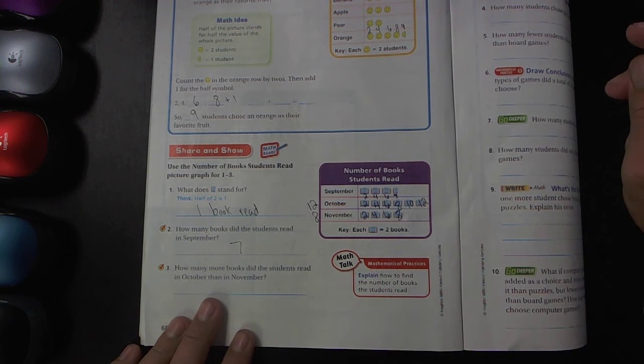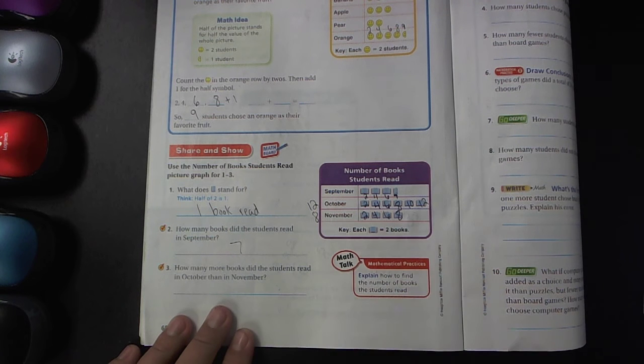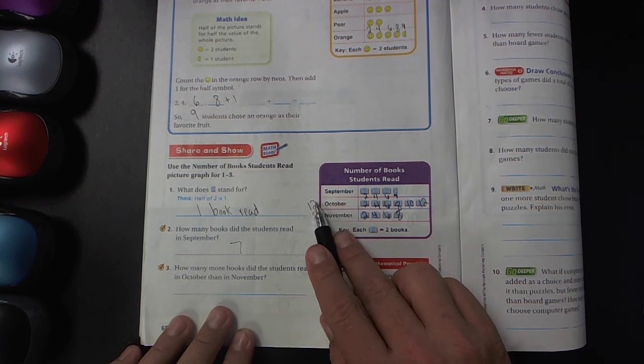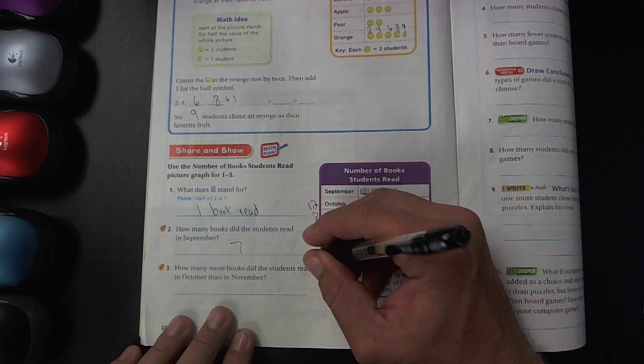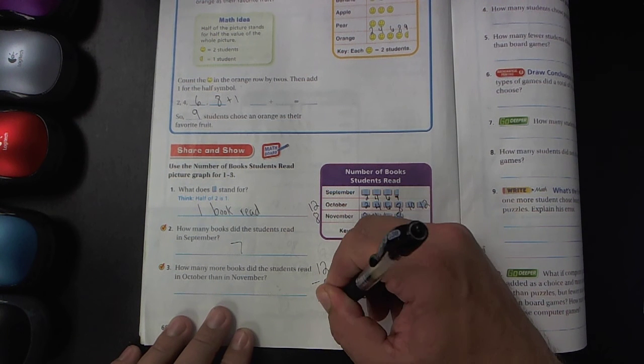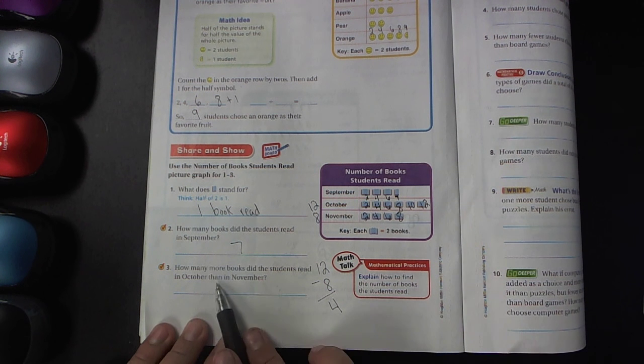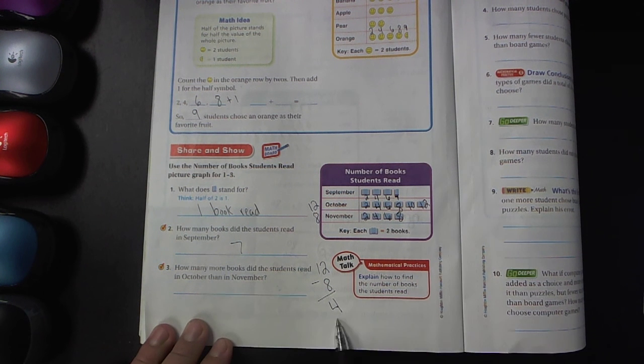We talked about in class that when you're finding out how much more of something, you're going to need to use subtraction. So in this case, you're trying to find the difference between October 12 and November 8. You do 12 minus 8 is 4. So how many more books did the students read in October than in November? The answer is four.